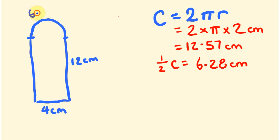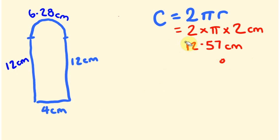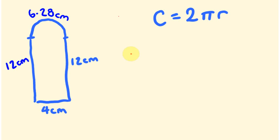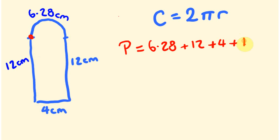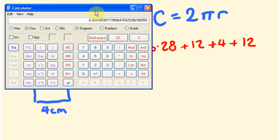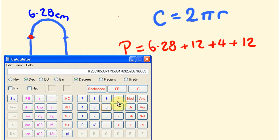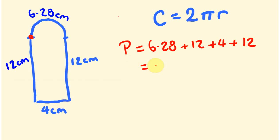We have this curved distance as 6.28 centimetres. Our perimeter is just going to be all sides added together. The other side is also 12 centimetres. The perimeter equals 6.28 centimetres plus 12 plus 4 plus 12, and on the calculator: 6.28 plus 12 plus 4 plus 12 equals 34.28. So this equals 34.28 centimetres, and that's our answer.